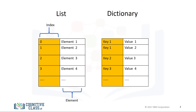A dictionary has keys and values. The key is analogous to the index — they are like addresses, but they don't have to be integers. They are usually characters. The values are similar to the elements in a list and contain information.